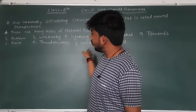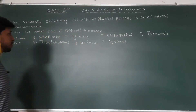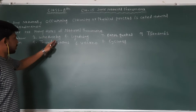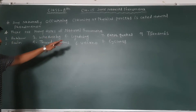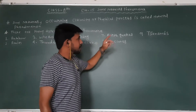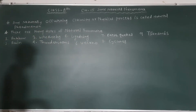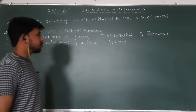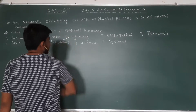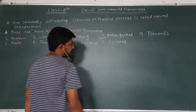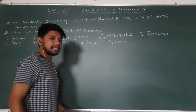So all these are natural phenomena: rainbow, weather, fog, thunderstorm, lightning, volcano, earthquake, tsunamis, and cyclones. But in this chapter, only two phenomena we will study. First is lightning and second is earthquake. So these two phenomena we will study.